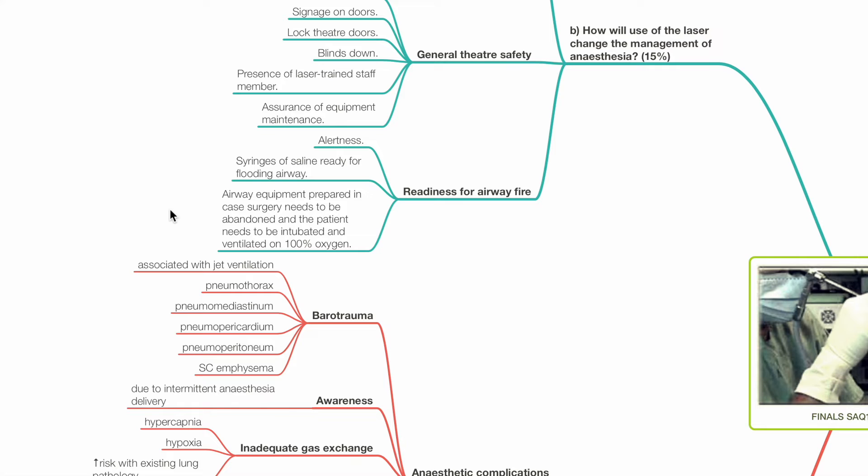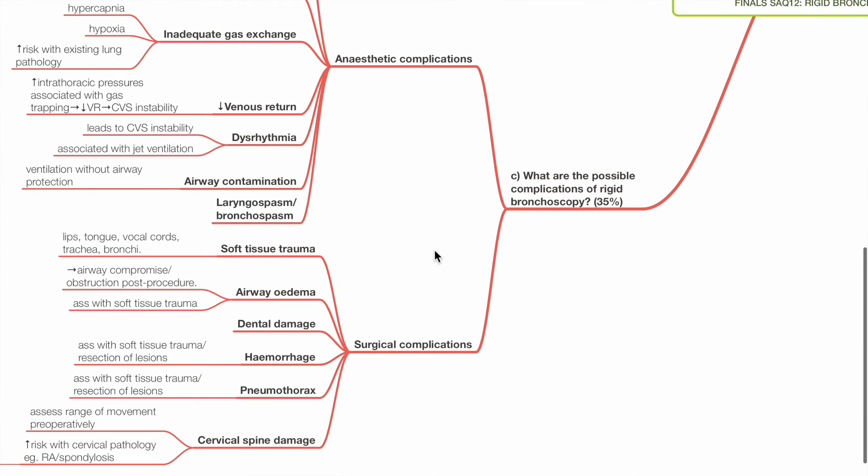Alertness. Syringes of saline ready for flooding the airway. Airway equipment prepared in case surgery needs to be abandoned and the patient needs to be intubated and ventilated on FiO2 of 1.